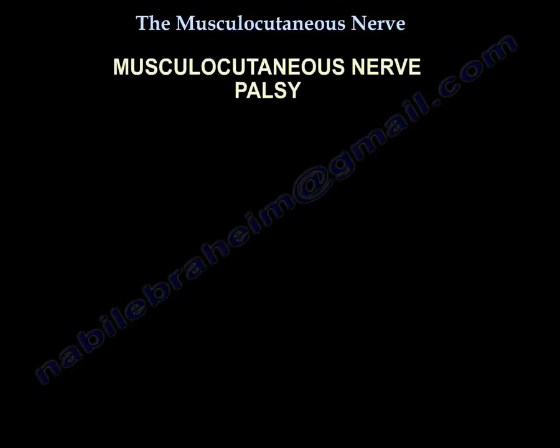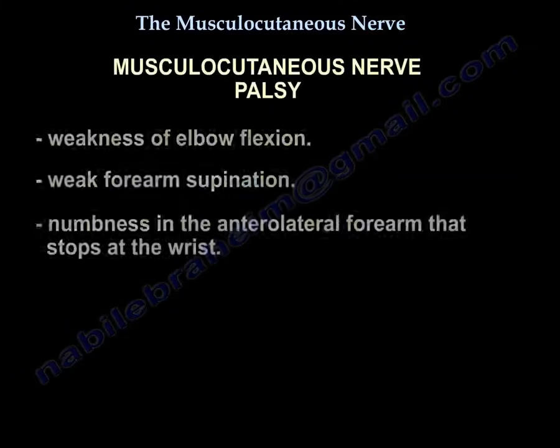Musculocutaneous nerve palsy: you will find weakness of elbow flexion, weak forearm supination, and numbness in the anterolateral forearm. This numbness in the anterolateral forearm stops at the wrist.